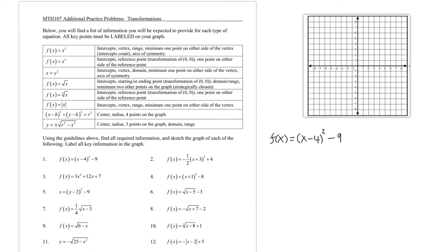One way to summarize that process is to set up an x-y table, putting 0 in for x and 0 in for y separately. When x is 0, f(0) = (0 - 4)² - 9 = 16 - 9 = 7. So we know that when x is 0, y is 7.